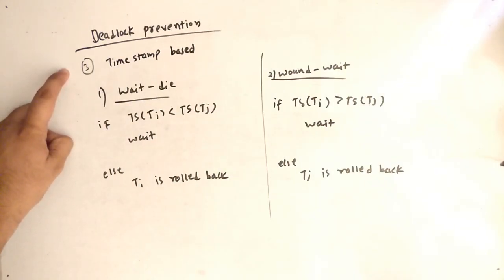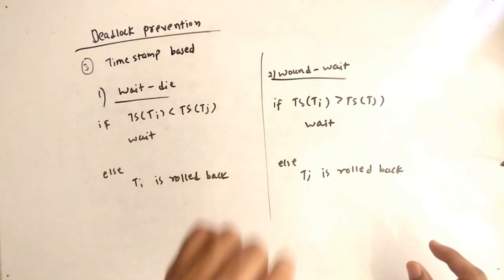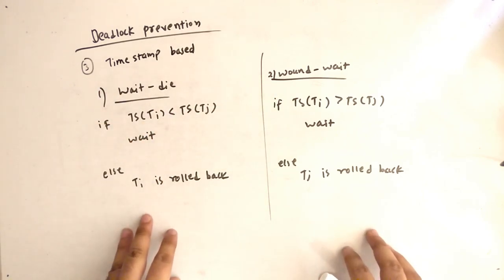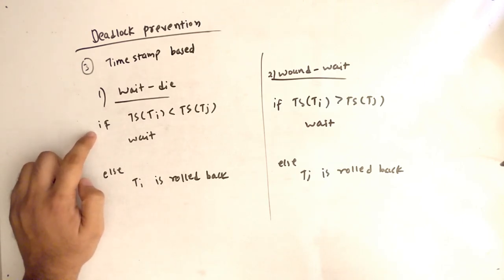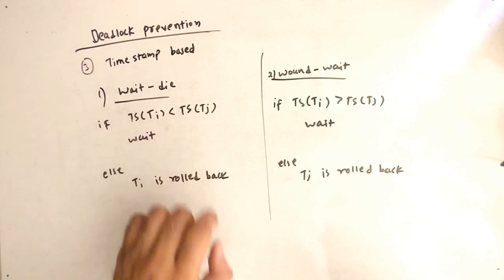Third point we have is timestamp based. So in that we have two topics: wait-die and wound-wait. These are very important topics. So let's understand it carefully. In first, wait-die we have: if timestamp of Ti is less than timestamp of Tj then wait. Who will wait? Ti.